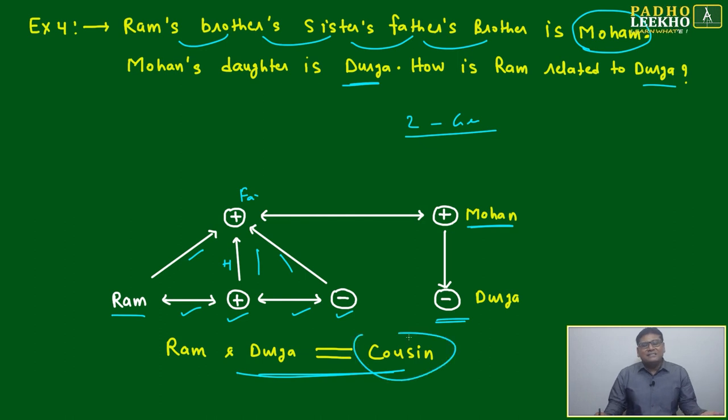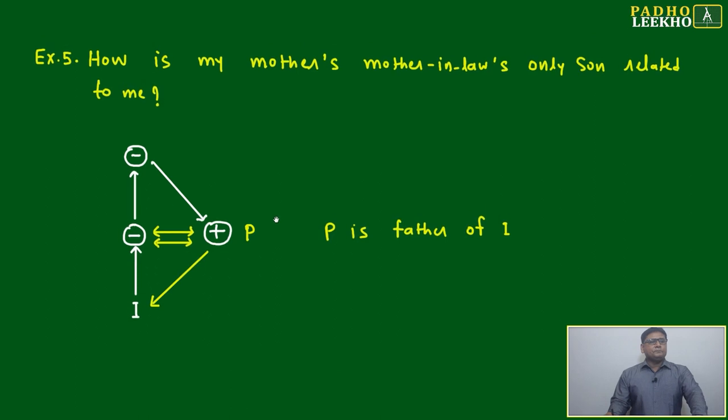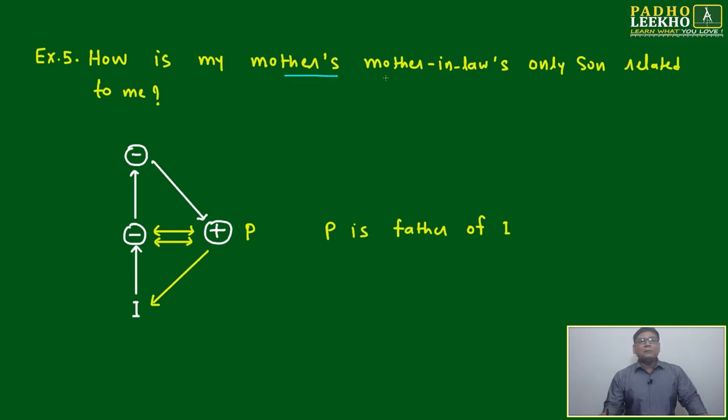They are cousins to each other, nothing else. Example number five: How is my mother's mother-in-law's only son related to me? It has again made a circle, circle in the sense mother's mother-in-law - it has made a circular format.